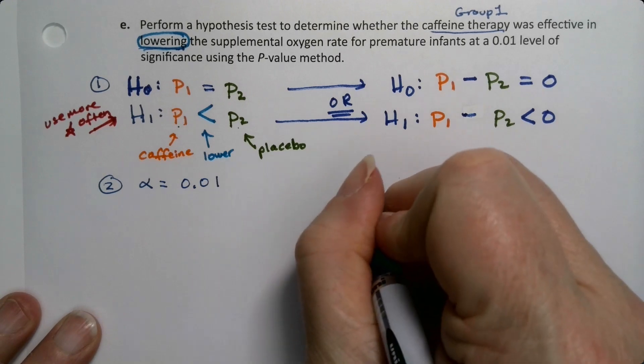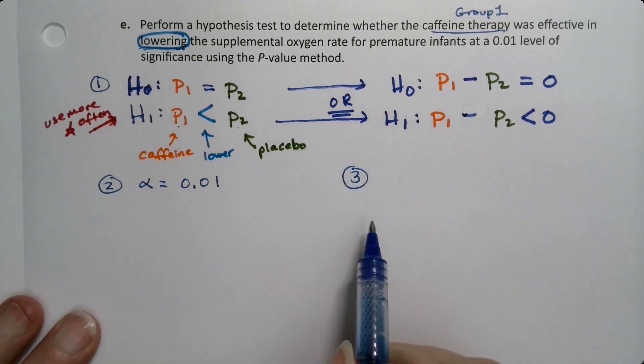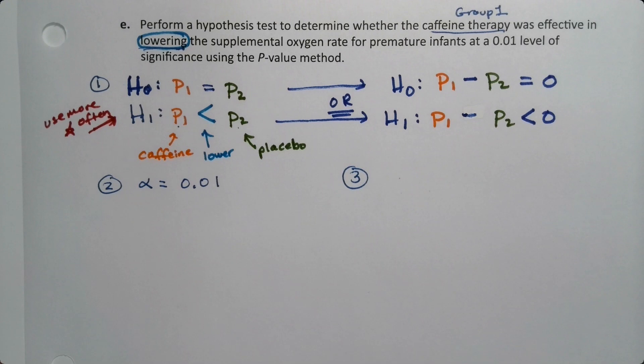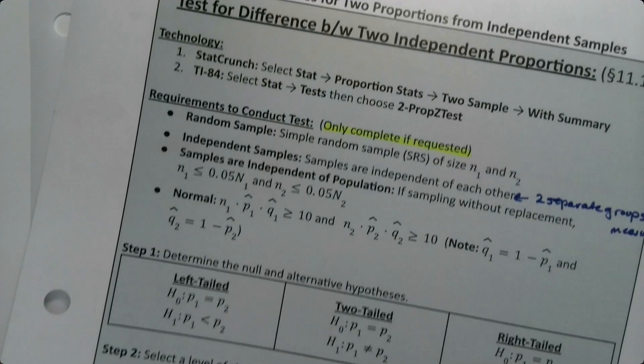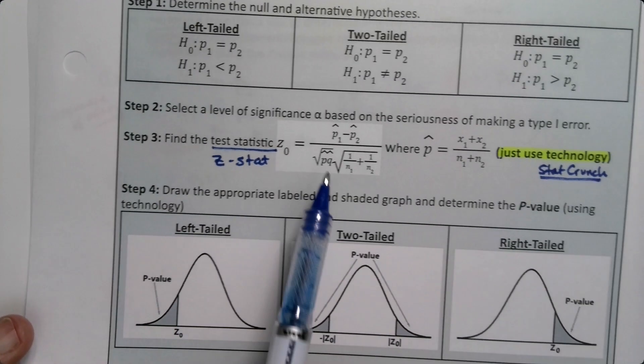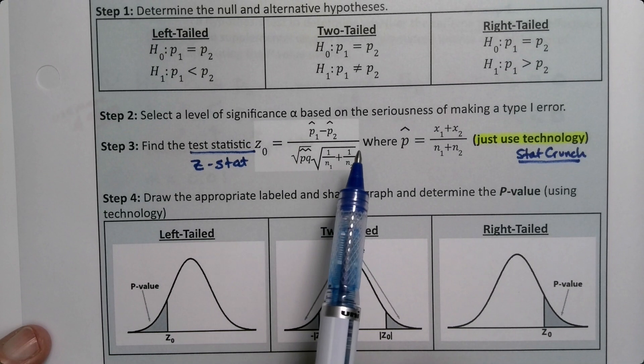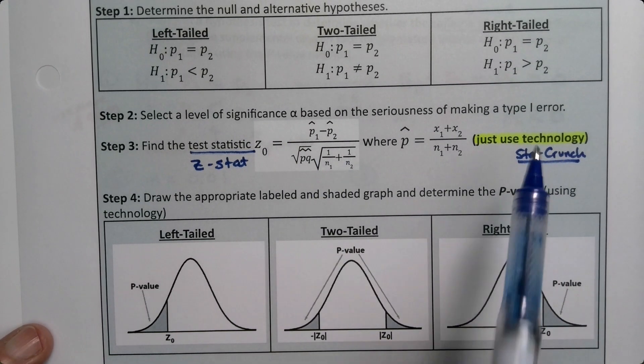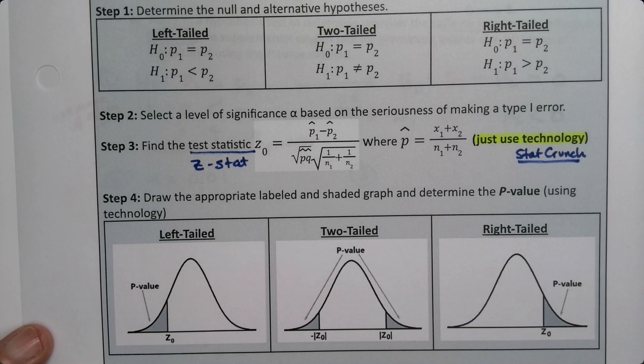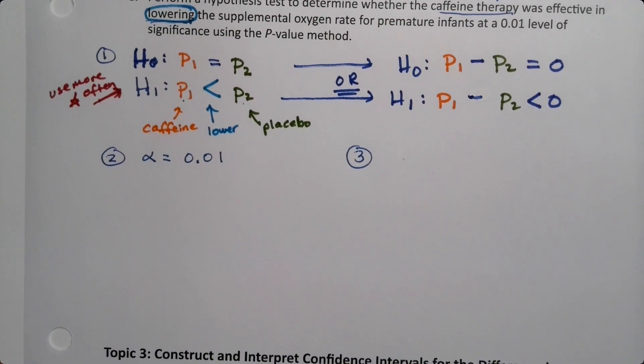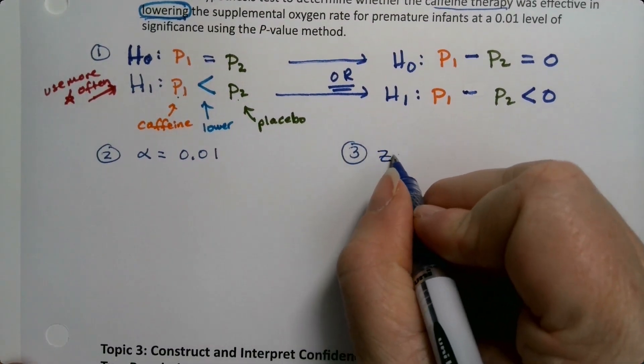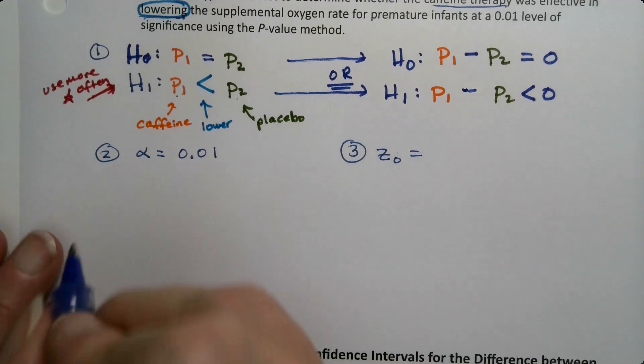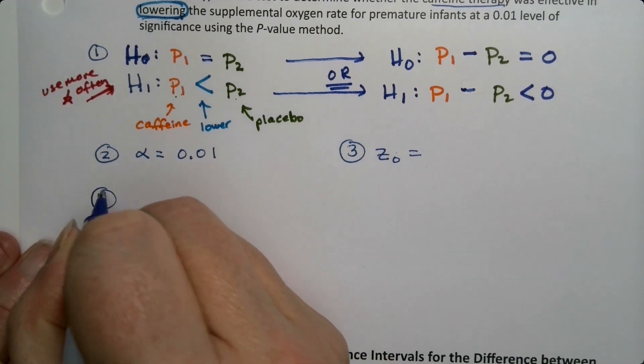Step three I'm going to put it right over here. Now this is where it took us a long time in chapter 10, but here it's this huge ugly formula but we're not going to write it - we're just going to use StatCrunch. StatCrunch will get us the values we need. So z0 will come out of StatCrunch.